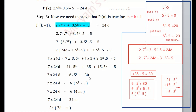We have 7·24d - 6·5ᵏ + 30. We can take 6 as common from the last two terms: 6(5ᵏ + 5), which can also be written as 6(5ᵏ - 5 + ... ) — specifically, taking 6 common from -6·5ᵏ + 30 gives -6(5ᵏ - 5). So the expression is 7·24d - 6(5ᵏ - 5).